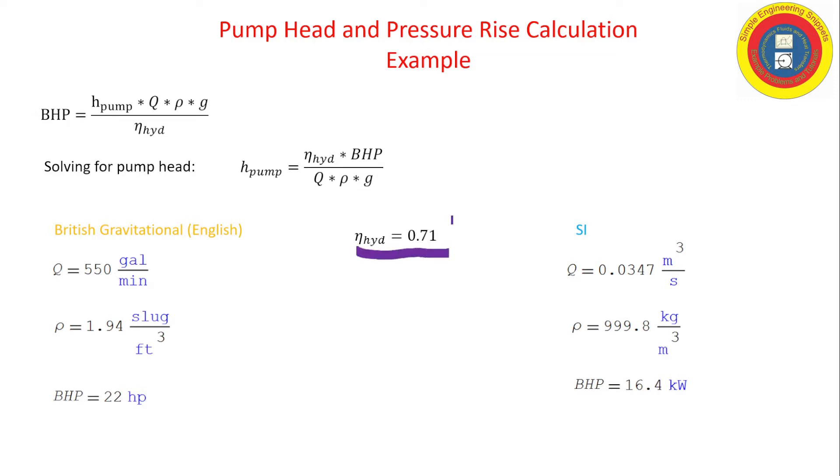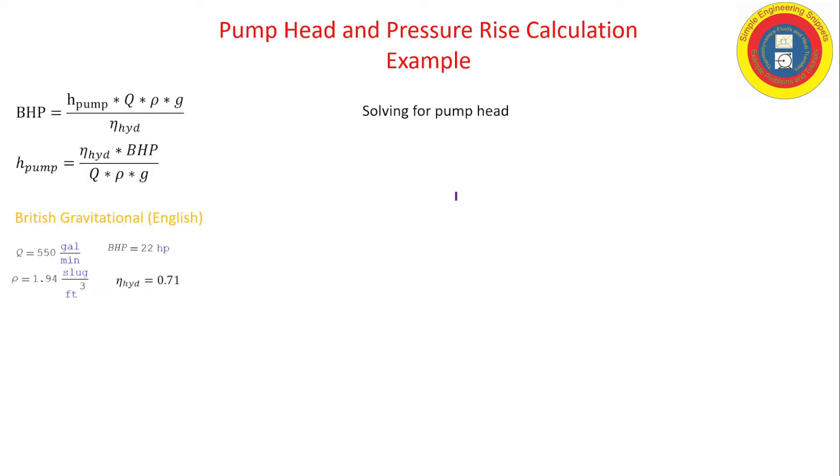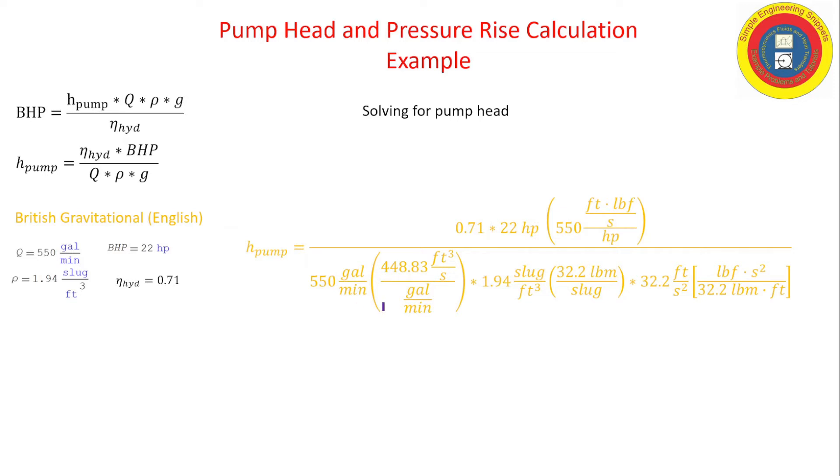The hydraulic efficiency does not depend on the system of units; it's 0.71 for both systems. Okay, so let's go ahead and work with the English or British gravitational system of units. We plug in our parameters with units, and as you can see, as is typical, we have a lot of conversion factors we have to go through, including a one over g sub c to get the units to work out. But it is doable, and when we're done we get that the head of the pump is 112 feet.